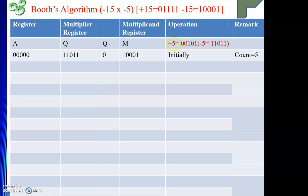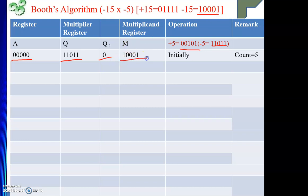Then what is minus 5? Take the 2's complement of 0 0 1 0 1. After flipping all the bits and adding 1, it is negative 5 — 1 1 0 1 1. This is my multiplier in Q. The A register will have 5 zeros. To the right of the LSB in the multiplier, Q minus 1 is assumed to be 0. The multiplicand is minus 15. Initially this is my setup and my count value will be 5.